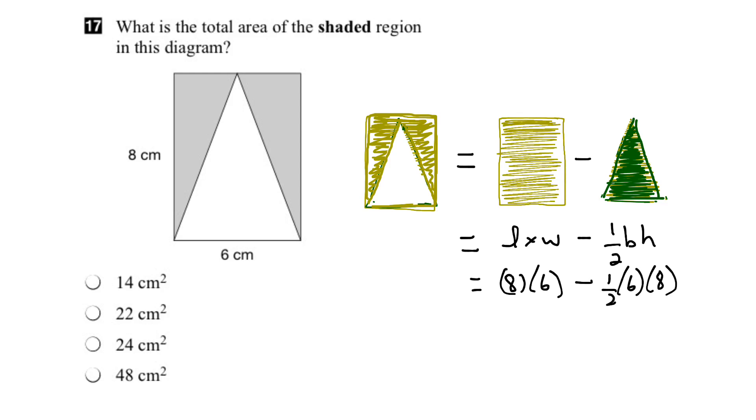And again, we're going to subtract these two. Okay, so eight times six is forty-eight. And half six is three times eight is twenty-four.